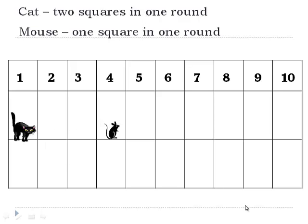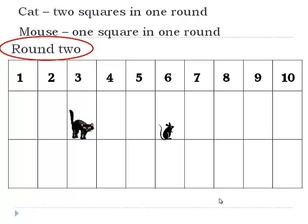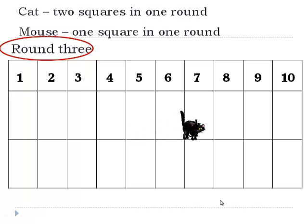Let's see what happens in round 1: the mouse moves by one square, the cat moves by two squares. In round 2, again the mouse moves by one square and the cat moves by two squares, ending up at square number 5. In round 3, the mouse moves by one square and the cat moves by two squares, ending up at the same square as the mouse — it catches up with the mouse.